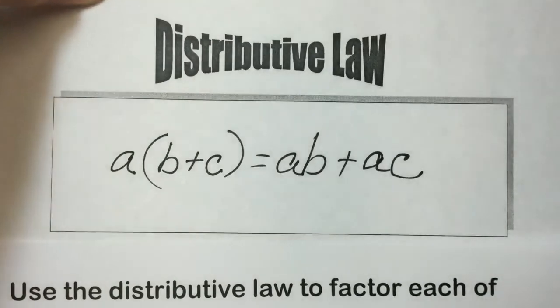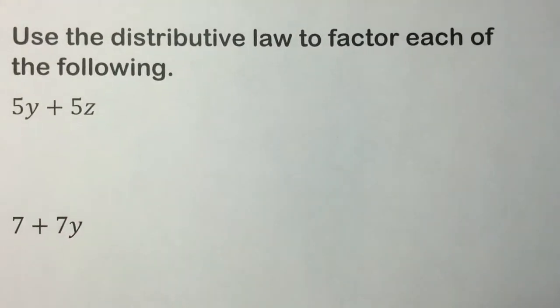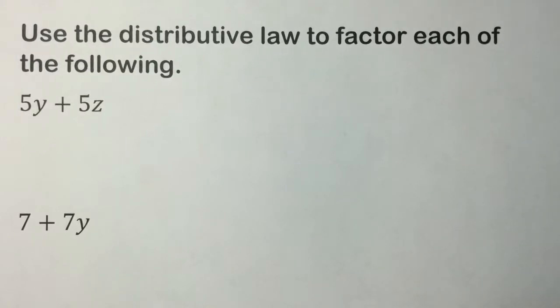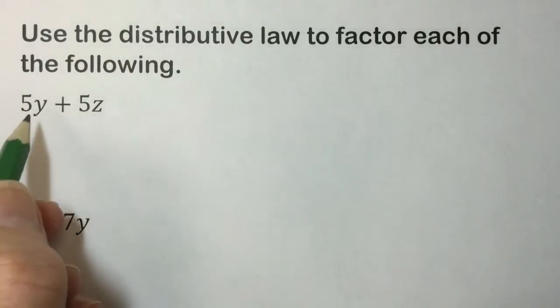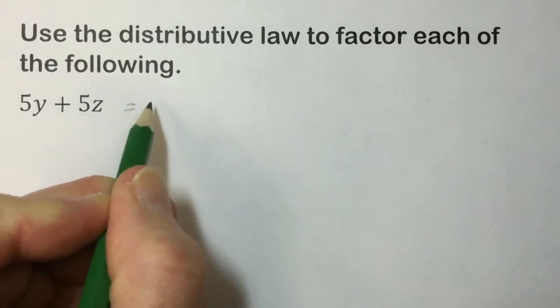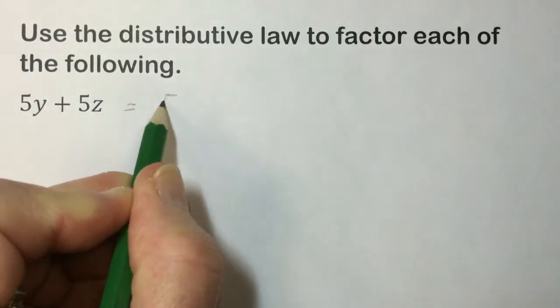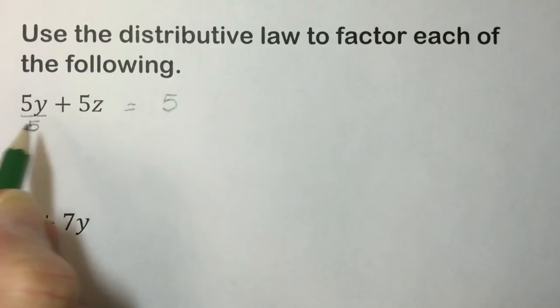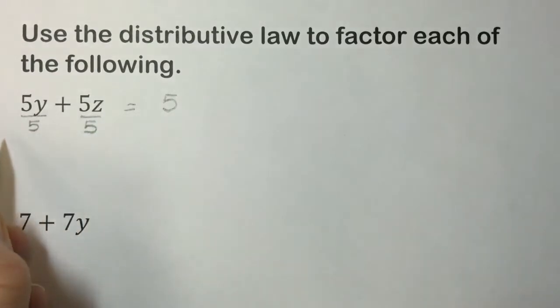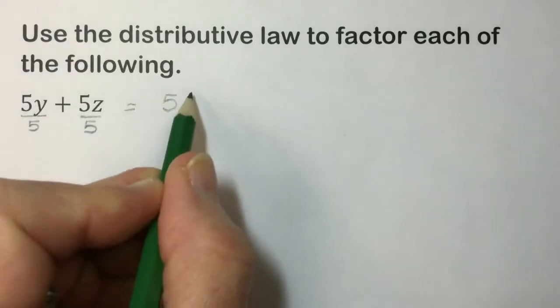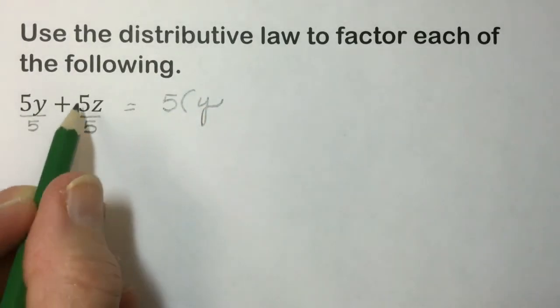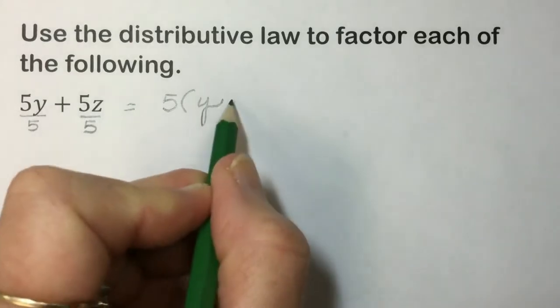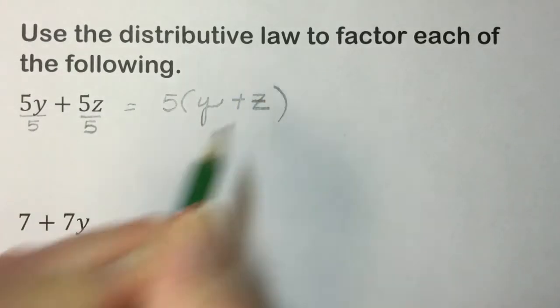Let's use the distributive law to factor each of the following, and we're moving to the left to simplify these. So between these two terms, there's a common 5. We will factor out that 5, which you can think of as division. The opposite of multiplying is dividing. The 5's cancel out leaving a Y from the first term. The 5's cancel out leaving a Z in the second term.